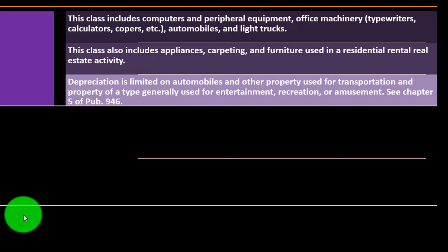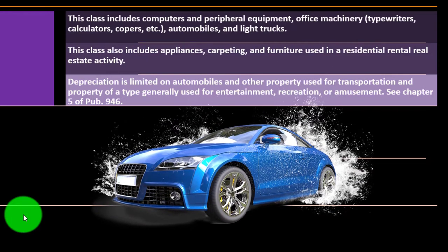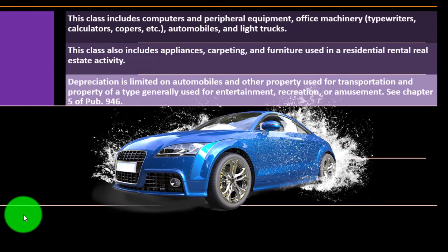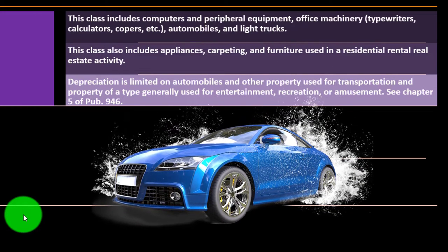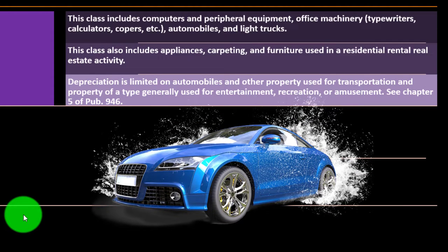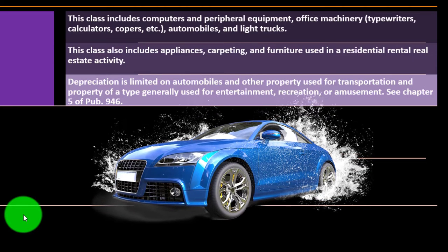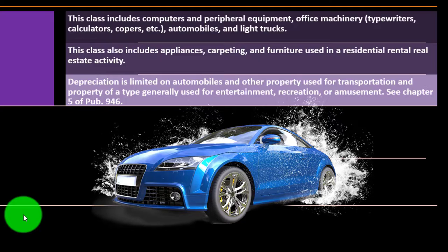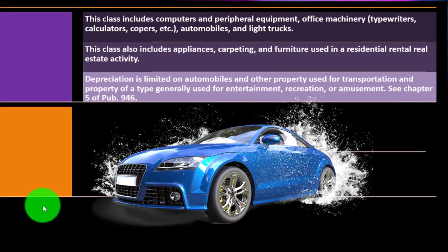You can see Chapter 5 of Publication 946 for more information there. The IRS is a little bit more skeptical of something like an automobile because it could be used for personal and business use, and people could be purchasing super fancy automobiles not just for utilitarian business reasons. So they put limits on those, and you can see a similar rationale for things used for entertainment and recreation.